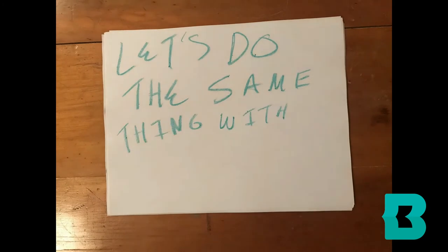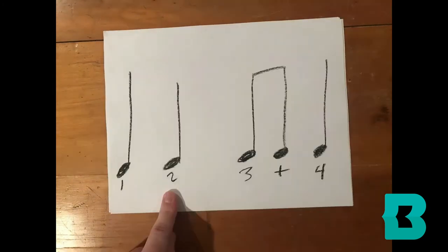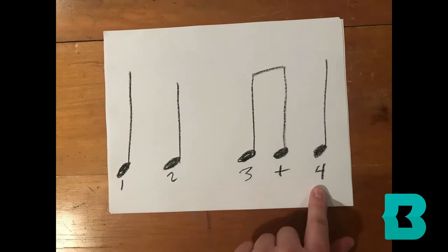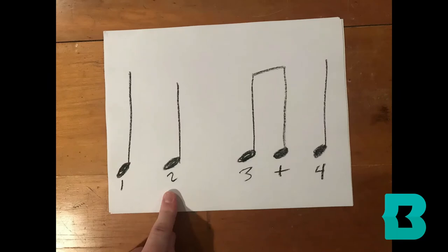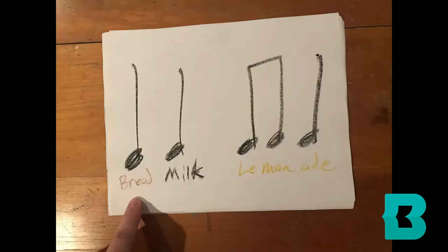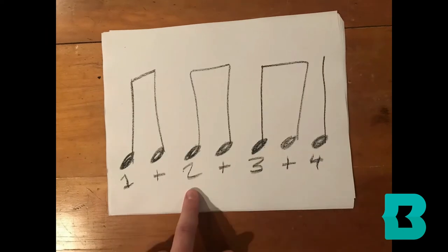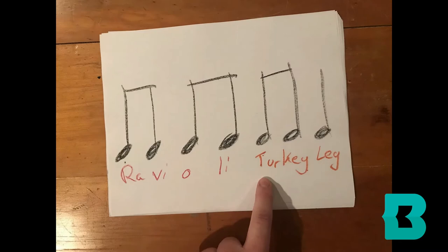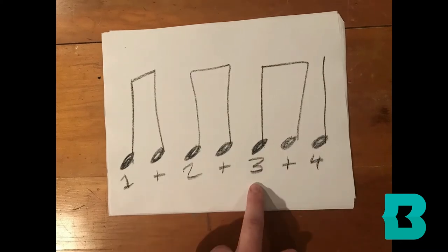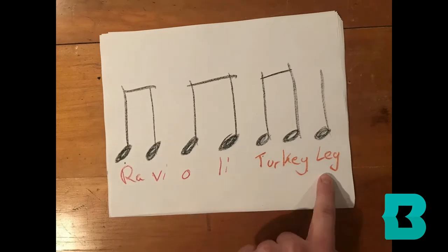Let's do the same thing with a few other rhythms. One, two, three, and four. Bread, milk, lemonade. One, two, three, and four. Bread, milk, lemonade. One, and two, and three, and four. Ravioli, turkey, leg. One, and two, and three, and four. Ravioli, turkey, leg.